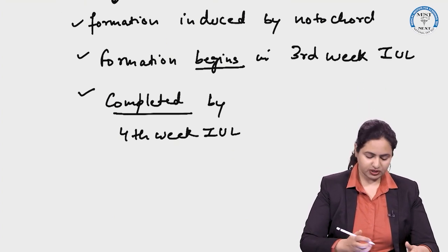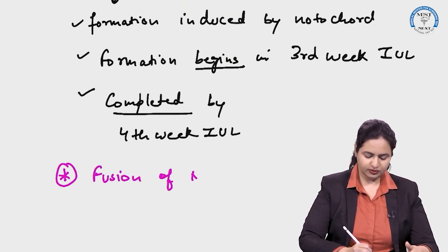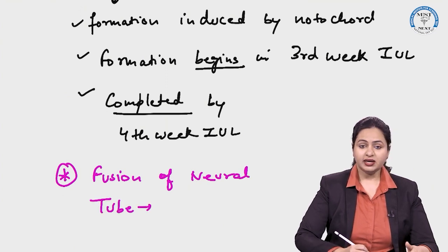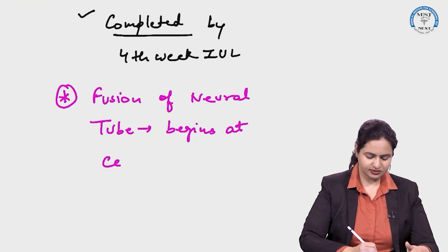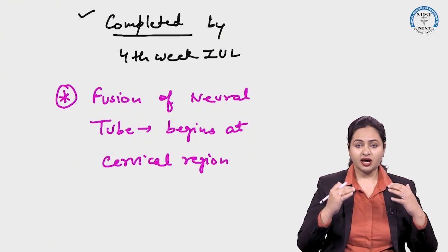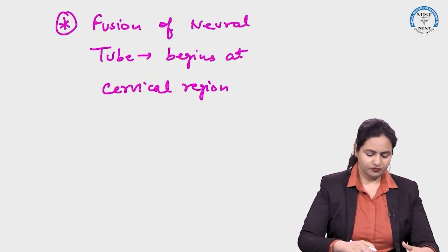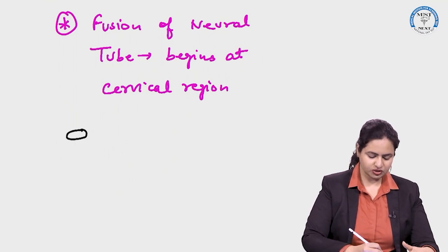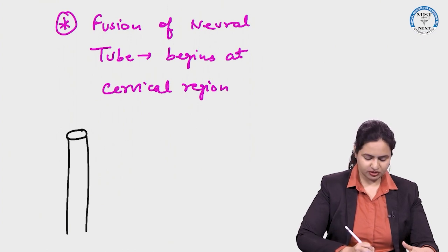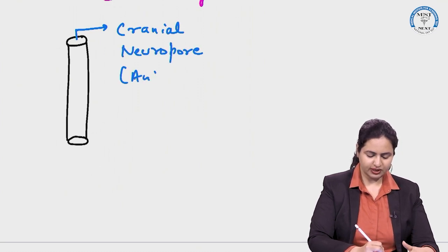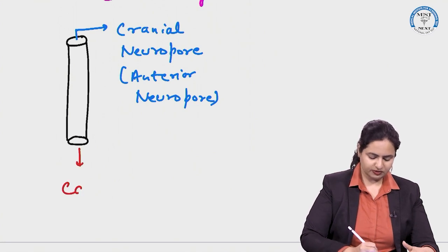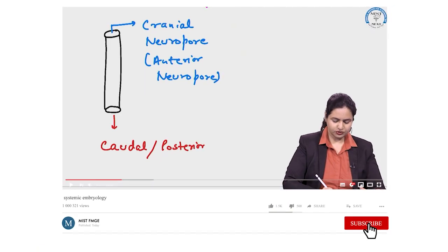An important point regarding neural tube formation: the fusion of the neural tube begins at the level of the cervical region, and then extends cranially as well as caudally. This forms a tube-like structure with openings at both ends — the cranial opening is termed the cranial neuropore (also called the anterior neuropore), and the caudal opening is termed the caudal or posterior neuropore.